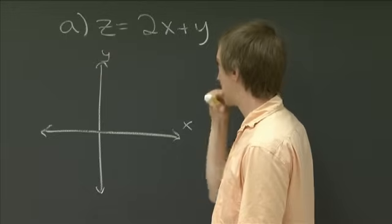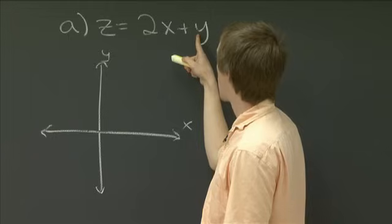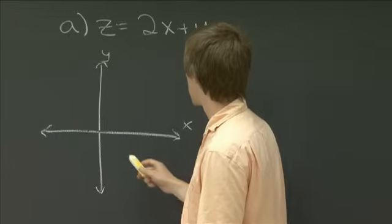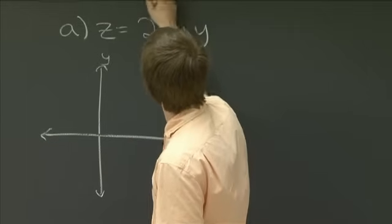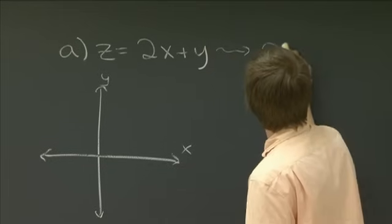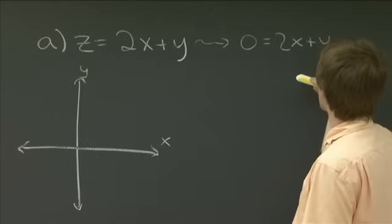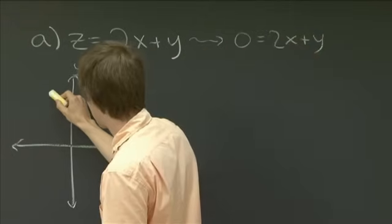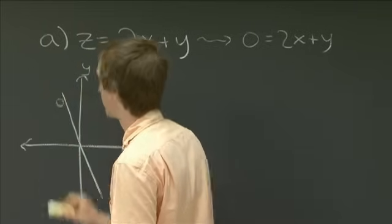if we take the level curve at z equals 0, then we have just the equation 2x plus y equals 0. And so that has intercept. So we're looking at 0 equals 2x plus y. So that's just y equals minus 2x. So that's this level curve. That's the level curve at z equals 0.